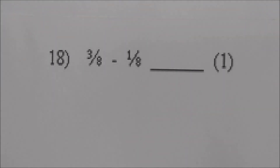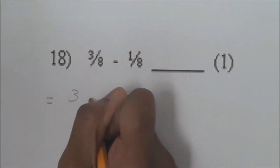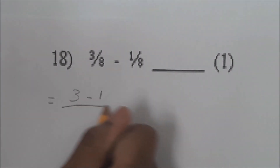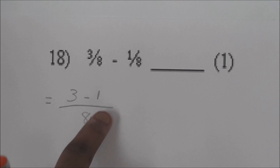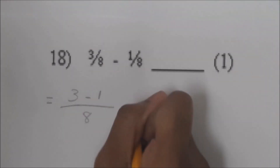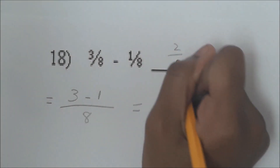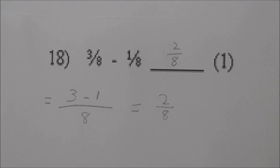Number 18: 3 over 8 minus 1 over 8. We're going to put 3 minus 1 over 8, which is 2 over 8. Can you reduce 2 over 8? Yes — you divide by the greatest common factor, 2, to get 1 over 4. The answer 2 over 8 is correct, and reduced it's 1 over 4. Very good.